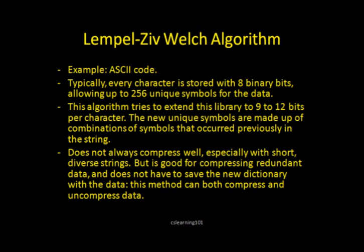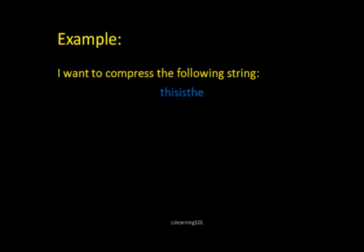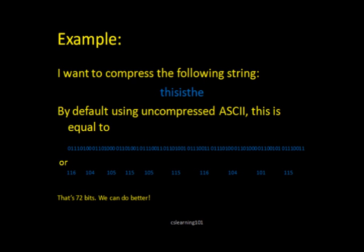As an example, I have a simple string here. I want to compress "this is the". By default, if this was uncompressed ASCII code, it would look like this — this long string of bits. That's hard to read, so I also converted it to the numeric values that it would be in ASCII. That's about 72 bits in total. That's a lot for such a small word. We can do better. Let's see if we can compress it using our new algorithm.